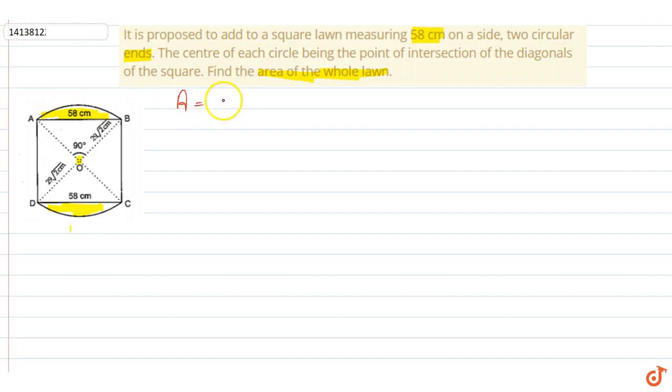So, we take capital A twice into segment area formula: pi theta by 360 minus sin theta by 2 and cos theta by 2.